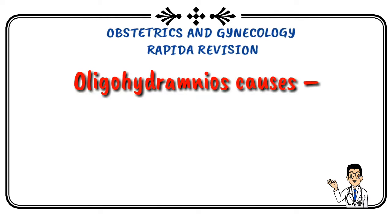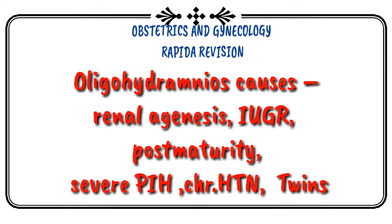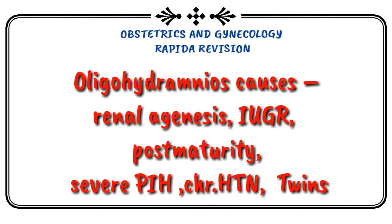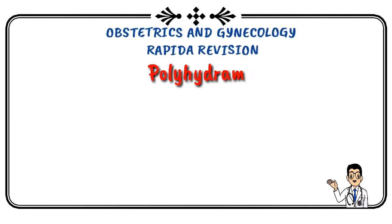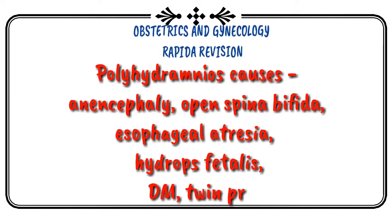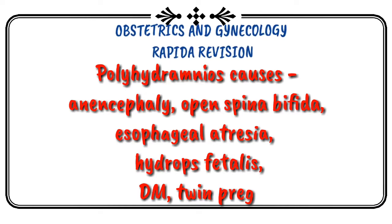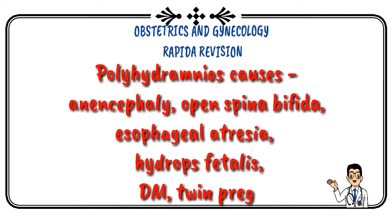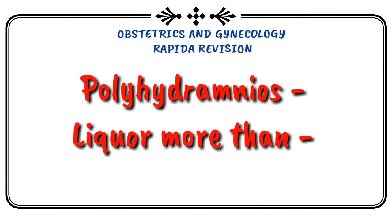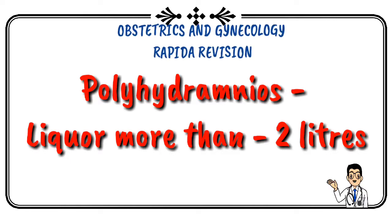Causes of oligohydramnios include renal agenesis, IUGR, post-maturity, severe pregnancy-induced hypertension, chronic hypertension, and twins. Causes of polyhydramnios include anencephaly, open spina bifida, esophageal atresia, hydrops fetalis, diabetes mellitus, and twin pregnancy. Polyhydramnios is defined as liquor more than 2 litres.